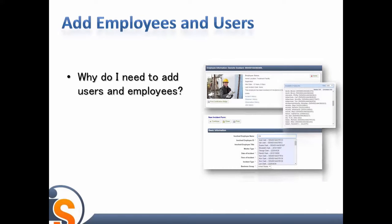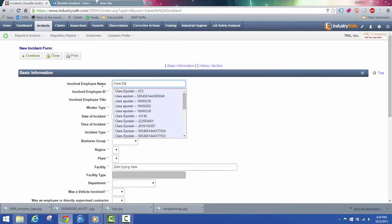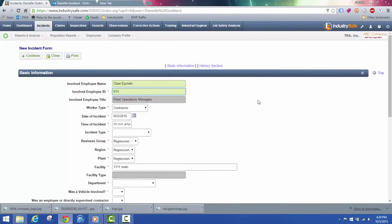Why do you need to add users and employees? Depending on the size and needs of your organization, you may have multiple users enter data and view reports and trends in IndustrySafe. Additional users allow you to reduce your time spent on data entry and on disseminating reports to members of your team. Pre-populated employee data within IndustrySafe allows you to more easily track the safety activity of each of your employees and allows for quick auto-populating of employee data when entering incidents and other safety records.